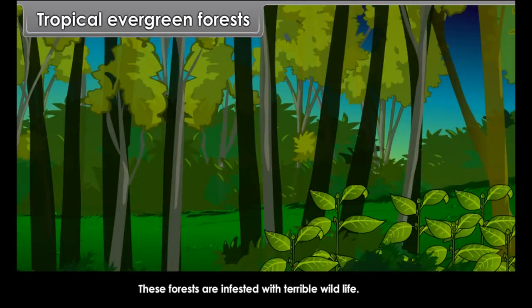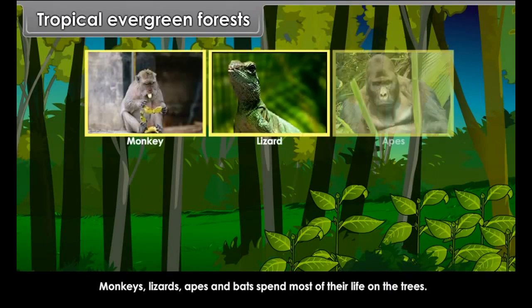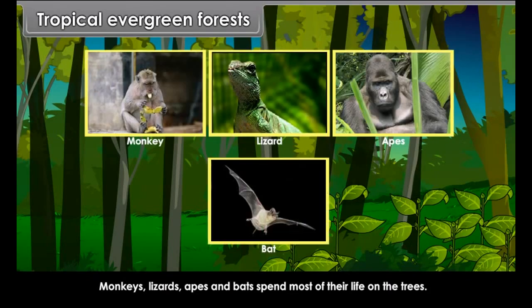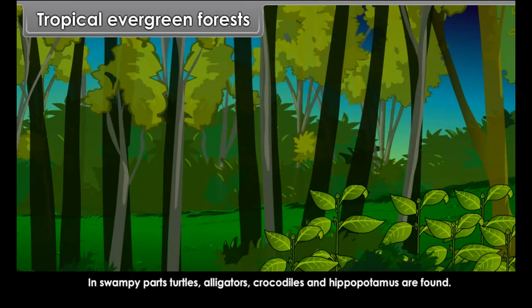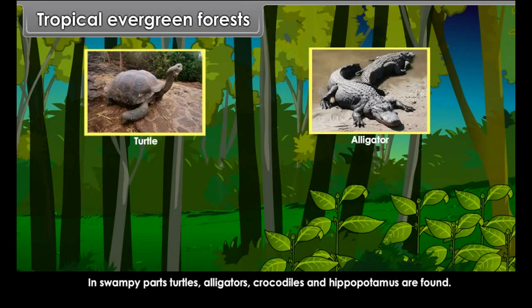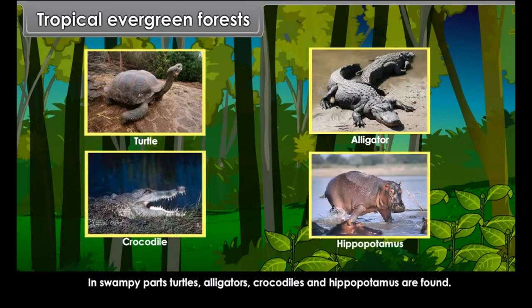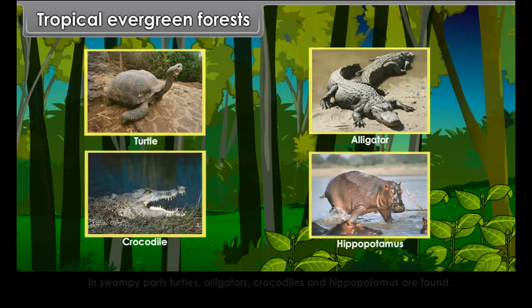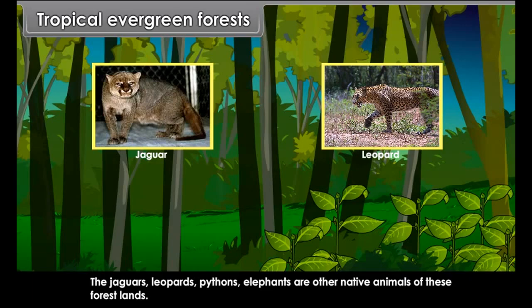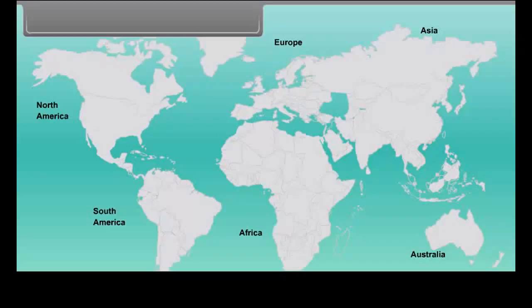These forests are infested with varied wildlife. Monkeys, lizards, apes and bats spend most of their life in the trees. In swampy parts, turtles, alligators, crocodiles and hippopotamus are found. Jaguars, leopards, pythons and elephants are the other native animals of these forest lands.